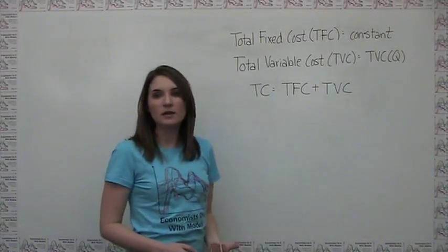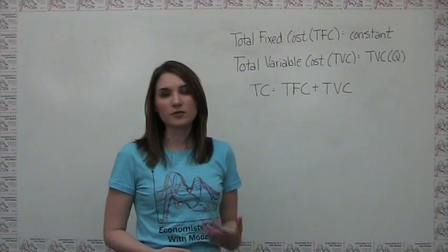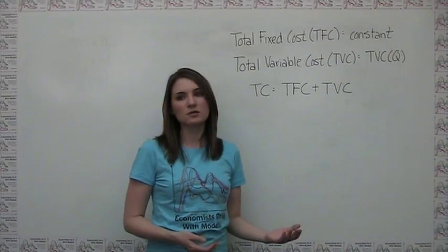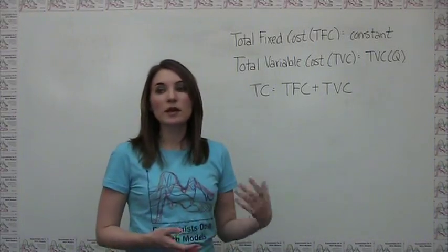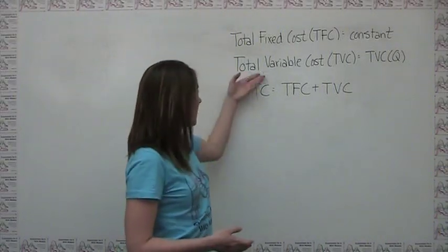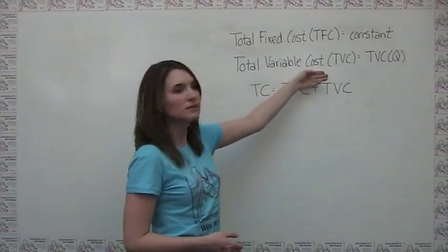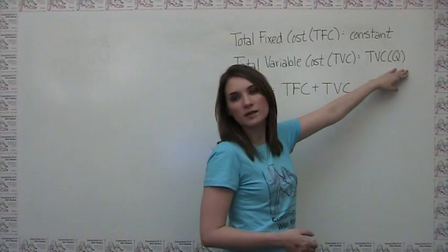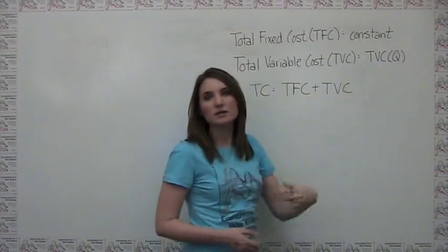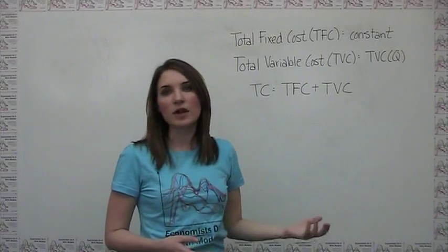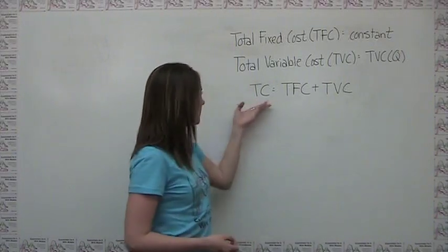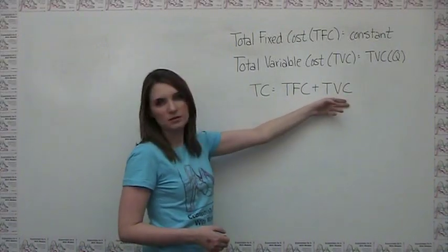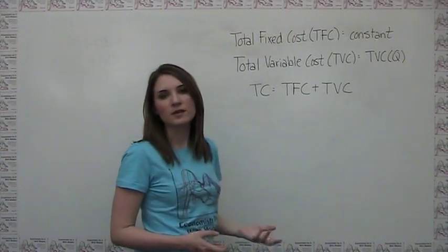Variable costs, on the other hand, are costs that scale with the level of production. For example, a firm needs ten times as much leather to make ten pairs of shoes as it does to make one pair of shoes, so leather is a variable cost for this firm. We can represent total variable cost, abbreviated TVC, as a function of quantity, to represent the idea that total variable cost depends on how much output the firm produces. We can then think of total cost as being built up from total fixed cost plus total variable cost, since everything is either a fixed cost or a variable cost.